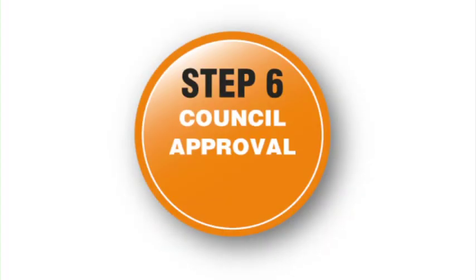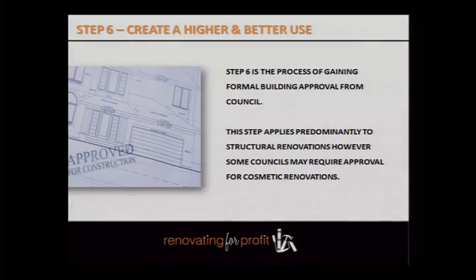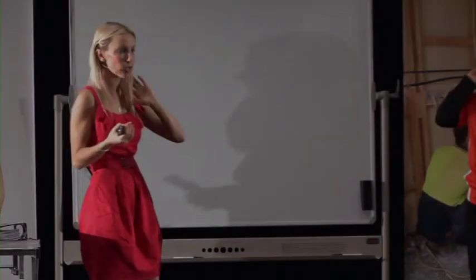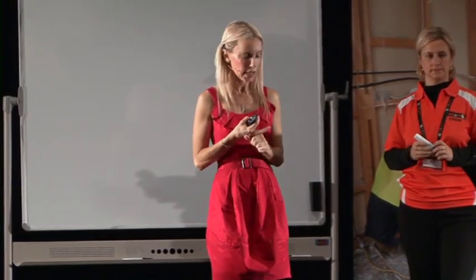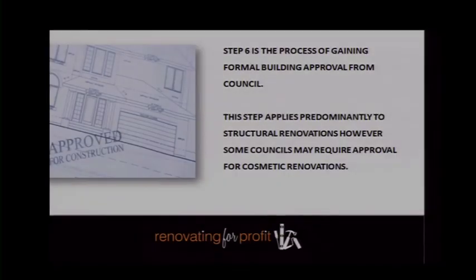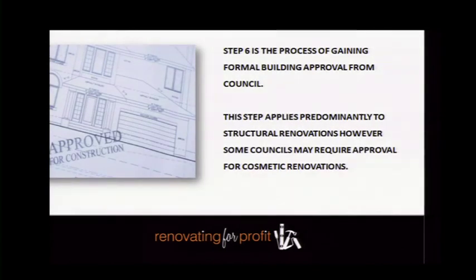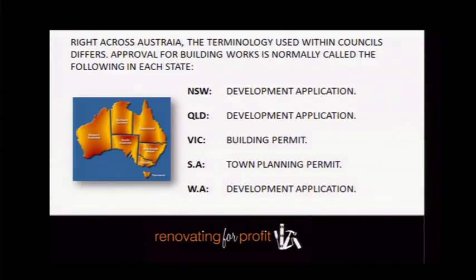Step number six is, once you've actually acquired the property — and if you need any help acquiring properties, that's what your postgraduate support is all about, you can phone the office for anything. Step six is the process of getting development approval for your structural renovation. If you're doing a cosmetic renovation you can skip step six entirely, but I want to teach you this because at some point I guarantee you'll end up doing structural renovations.